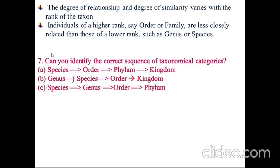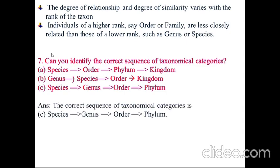Can you identify the correct sequence of taxonomical categories? The correct sequence of taxonomical categories is: species, then genus, then order, then phylum, because species is the smallest, then genus, then order, then phylum.